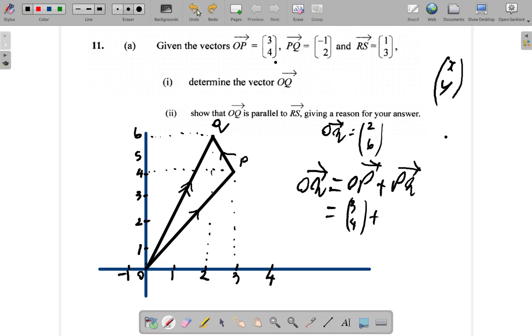So what you would say is OQ is equal to OP - OP is (3, 4) - plus PQ, which is (-1, 2). So what you have at top you have 3 minus 1, what you have at bottom 4 plus 2. So 3 minus 1 is 2 up top, 4 plus 2 is 6 down the bottom. So whether by drawing or calculation you get (2, 6), not (6, 2).